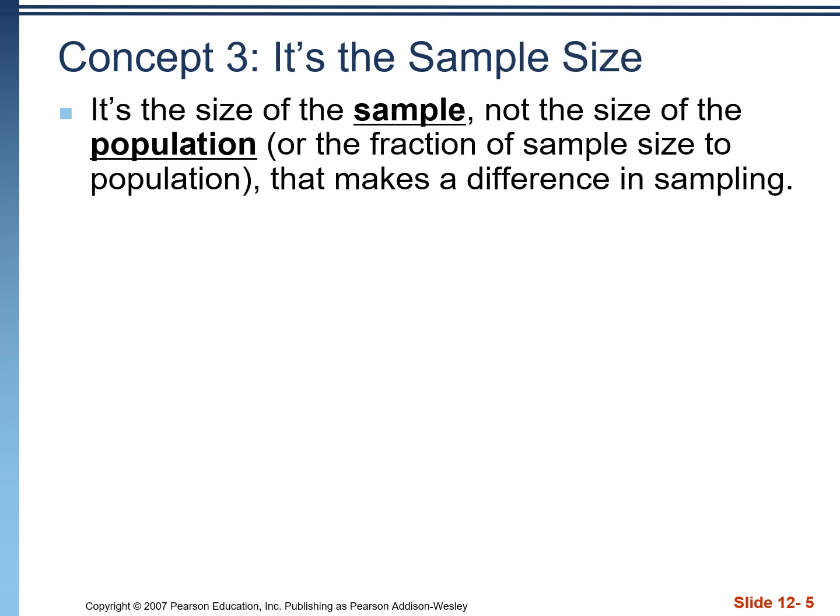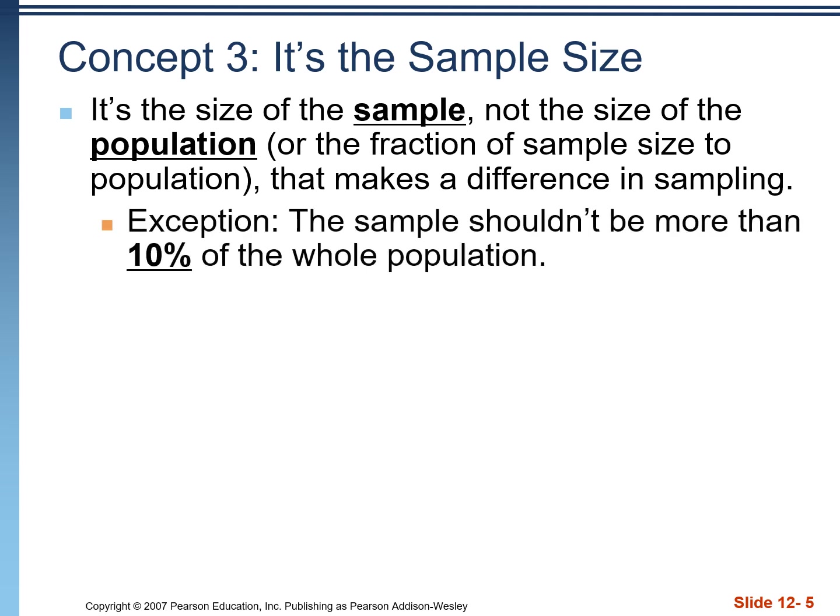One counterintuitive thing is that it's the size of the sample, not the size of the population, that determines how accurate our predictions will be. For example, if we poll 1,000 people in New Jersey for the governor's race and 1,000 people across the United States for the presidential race, we'll get equally accurate predictions despite the U.S. population being much larger. It's the size of the sample that matters. The one exception is that sample size should be a maximum of 10% of the population.